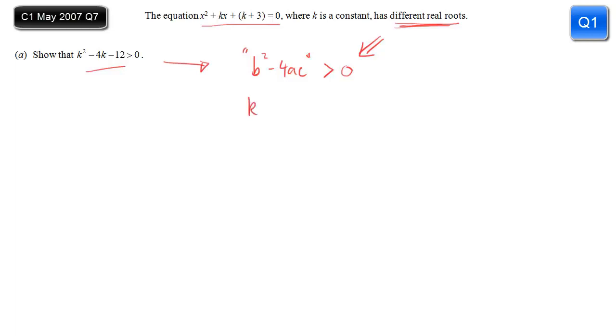So what is b? b is k, so k² minus 4 times a, which is 1, times c, which is k + 3. So writing that all down, that's my inequality greater than 0. And really all I need to do now is tidy it up. So k² minus 4 brackets k + 3 is greater than 0, and expand the brackets. k² - 4k - 12 is greater than 0. And oh look, that's exactly what we are after.